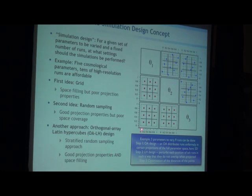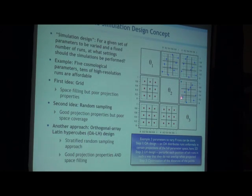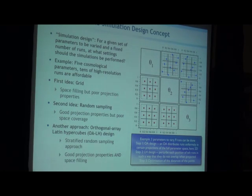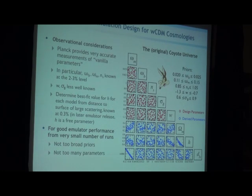The design puts everybody on a grid and then jiggles them around so that when projected down, nobody overlaps. You can also calculate distances between points and make them evenly distributed. The main point is that if I project this into two dimensions, I want good filling of the space. So we do five parameters: Omega baryon, Omega matter, the spectral index, the dark energy equation of state, and Sigma 8, varied within parameter constraints from existing surveys.